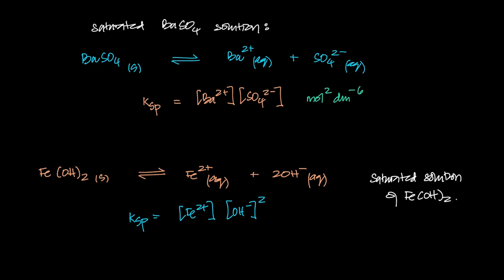Here, what do we have the units to be? So it'll be Fe²⁺ is moles per dm³ times OH⁻ squared, which is moles squared dm⁻⁶ squared.